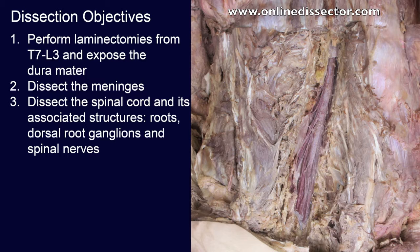Second, I will dissect the meninges. And third, I will dissect the spinal cord and its associated structures, including the roots, dorsal root ganglion, and spinal nerves. The first two objectives are shown in this video. The third objective will be shown in the second video of this two-part series on exposing the spinal cord and its associated structures.